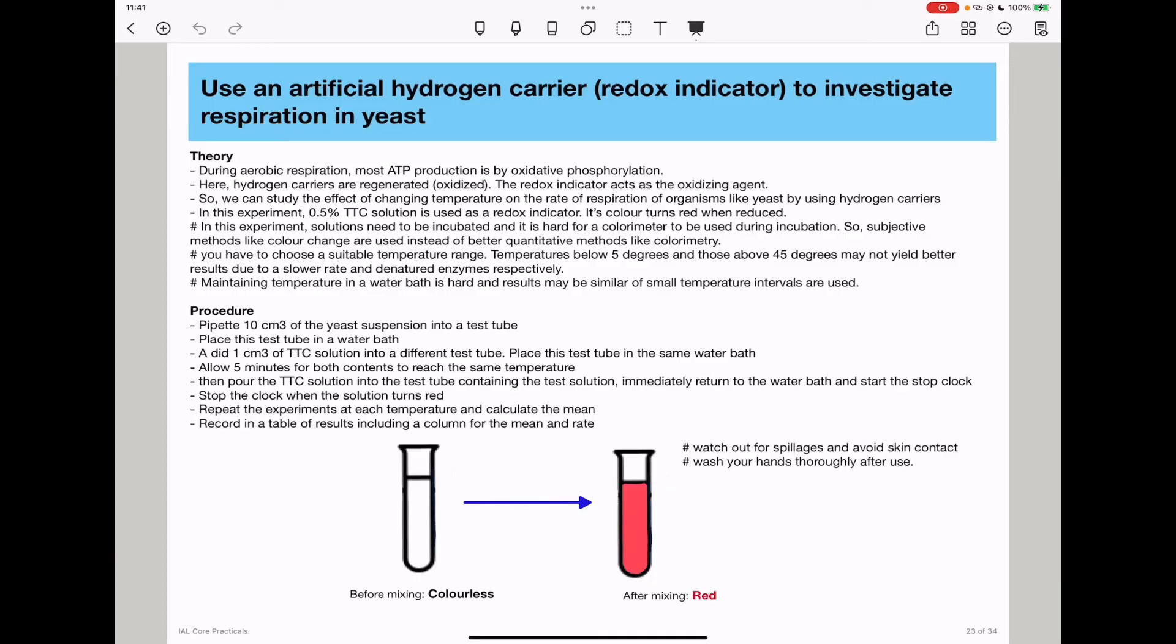When the solution turns red, stop the stopwatch, and then repeat the experiment at each temperature and calculate the mean. Then you will record your results, including a mean and a column for the rate, in a specific table.